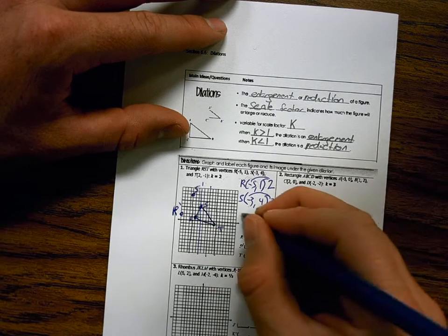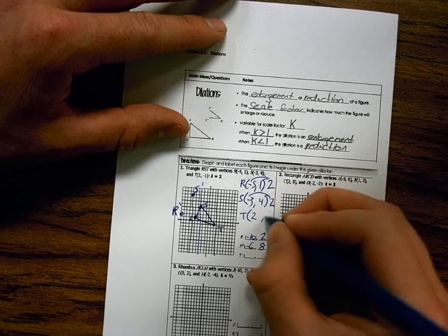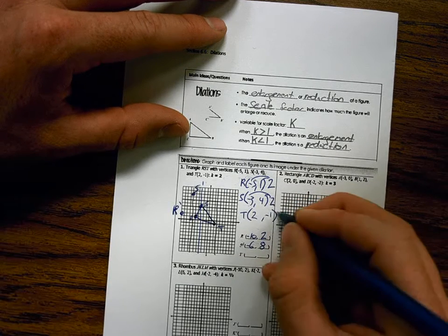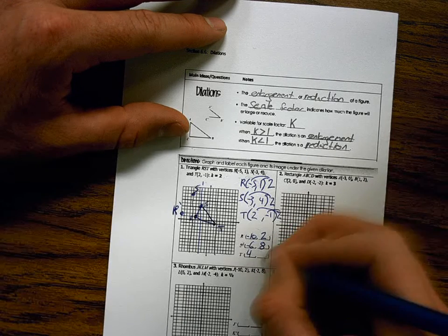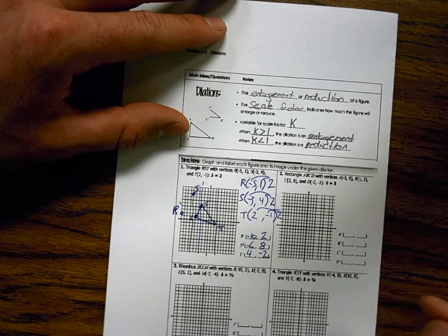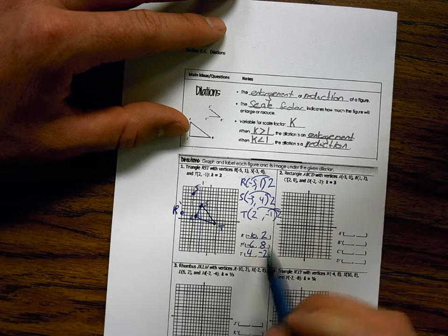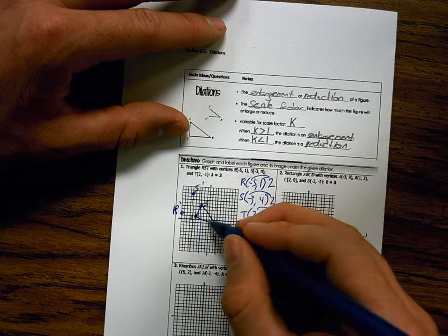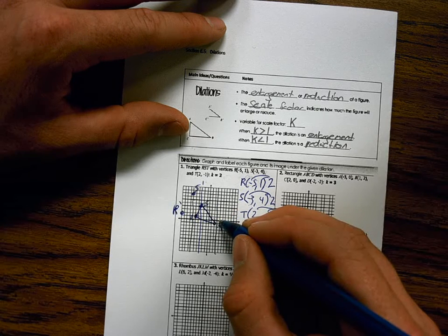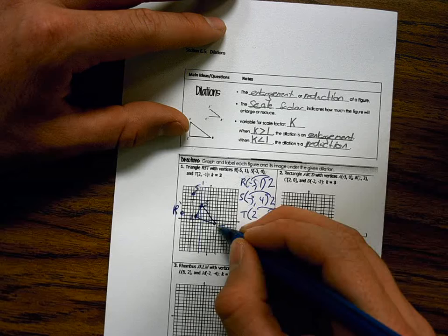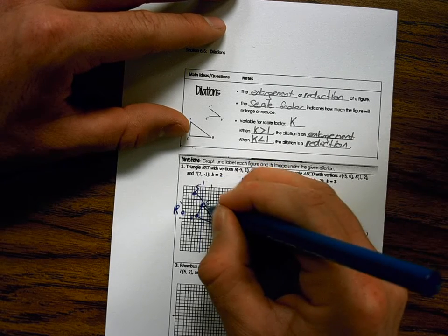Okay, last one. T. T is at 2, negative 1. Scale factor is 2. So I multiply the coordinate by 2. 4 and negative 2. So I graph that coordinate. And here is my new figure.